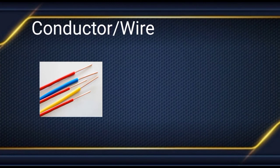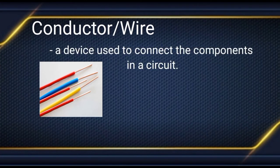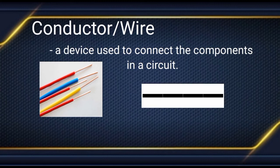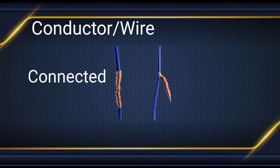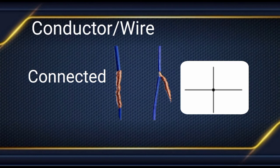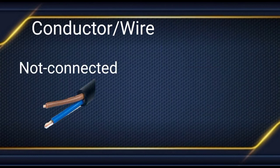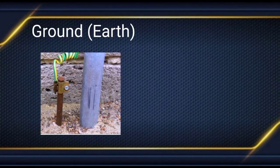Then we have the conductor or wire — a device used to connect components in a circuit. This is the symbol for a single wire. When two or more wires are connected, the symbol is like this. If two wires are joined but not connected, the symbol is like this.